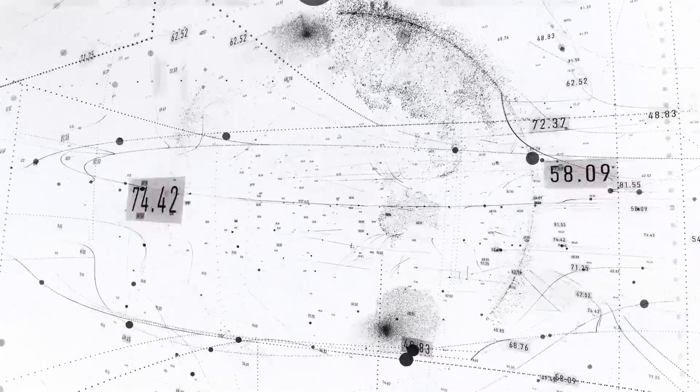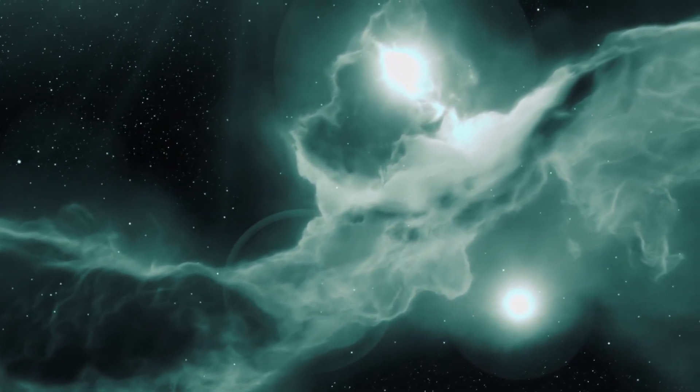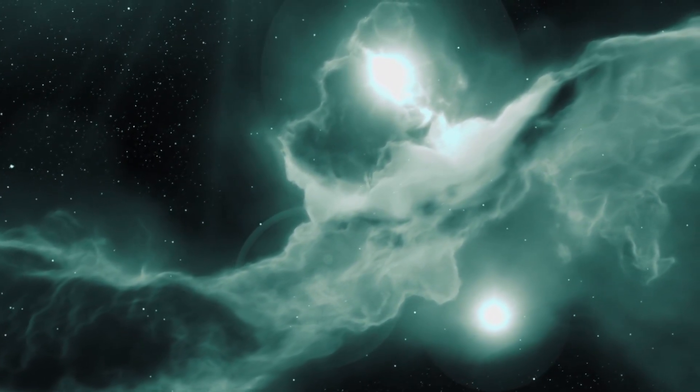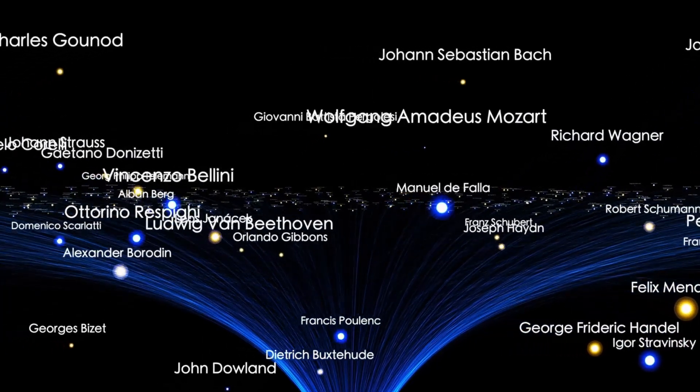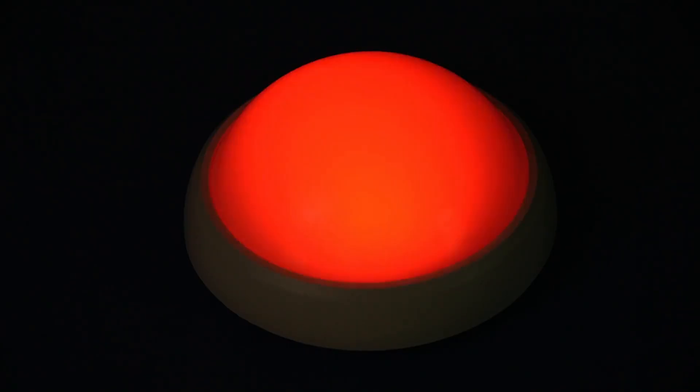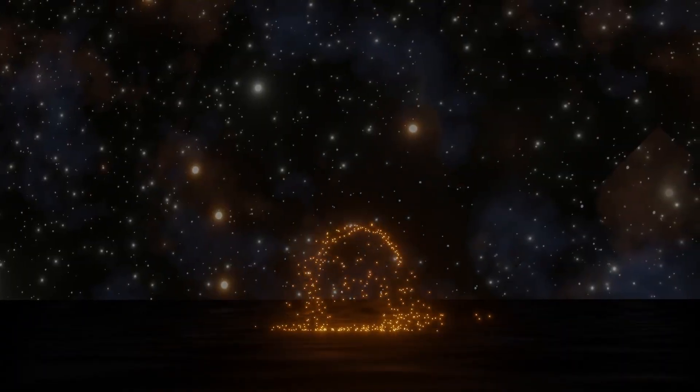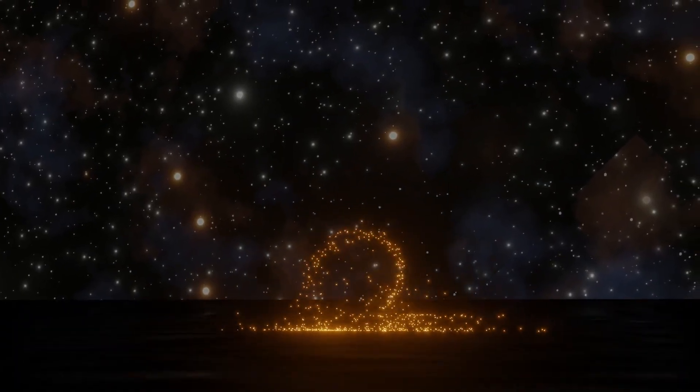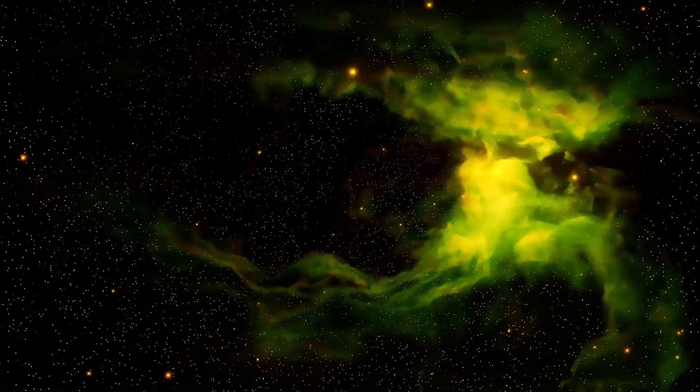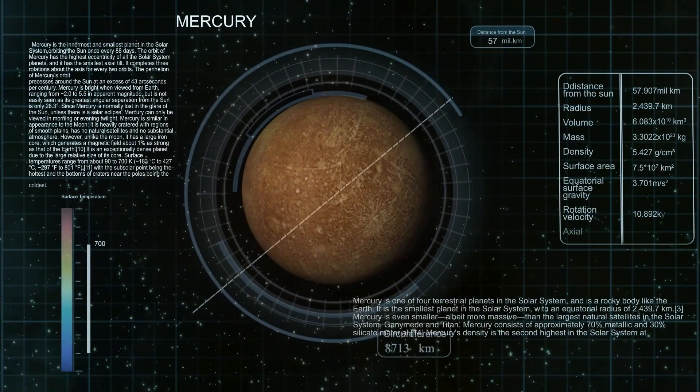When orbital analysts plotted the trajectory of 3i Atlas in three-dimensional space, an unsettling pattern began to emerge. Its path wasn't just mathematically unlikely. It aligned with gravitational assists from multiple planets in a way that seemed orchestrated. First Venus, then Mars, then a near-perfect slingshot past Jupiter. Each flyby adjusted its velocity just enough to shift its course precisely, like a probe using the solar system as a navigation grid. But more disturbing was its inclination—just 5 degrees off the ecliptic, retrograde but not erratic. This wasn't a wild interstellar fragment bouncing through gravity wells.